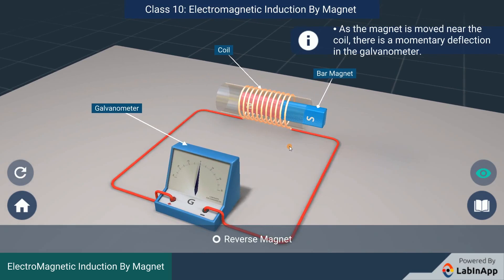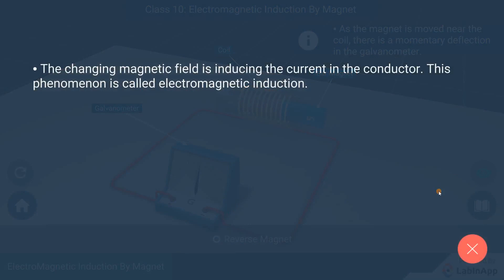Motion of the magnet is responsible for the changing magnetic field. This changing magnetic field is inducing the current in the conductor. This phenomenon is called electromagnetic induction.